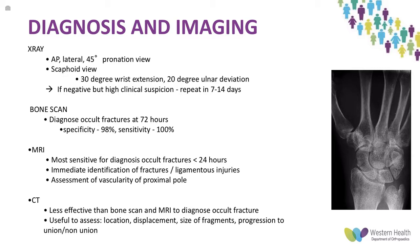Bone scan can diagnose occult fractures at about 72 hours with about 98% specificity, though it's not routinely used in our health service. MRI is also very sensitive, especially in the acute setting at less than 24 hours — it's useful because you can assess the vascularity of the proximal pole as well as any ligamentous injuries in addition to identifying the fracture. CT is less effective than bone scan or MRI for occult fractures, but is useful pre-operatively to assess fracture location, displacement, fragment size, and progression to union or non-union.